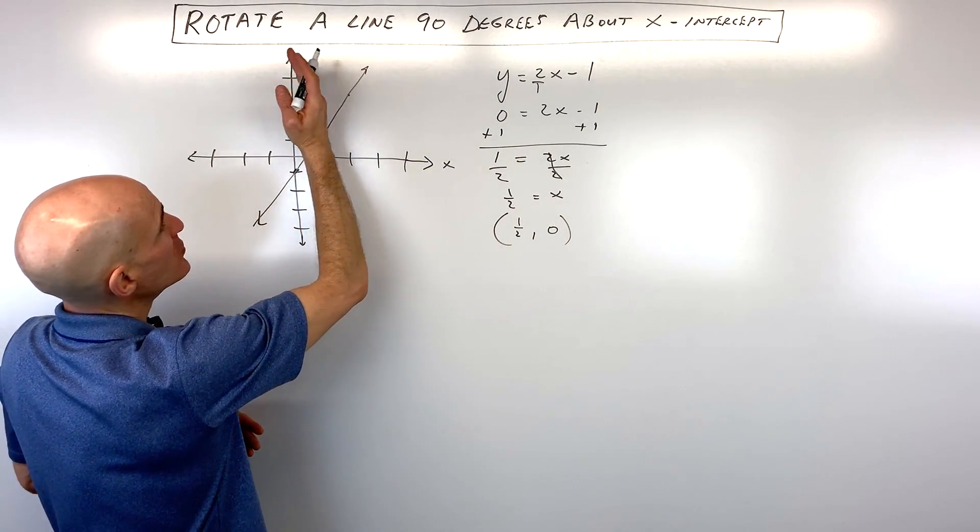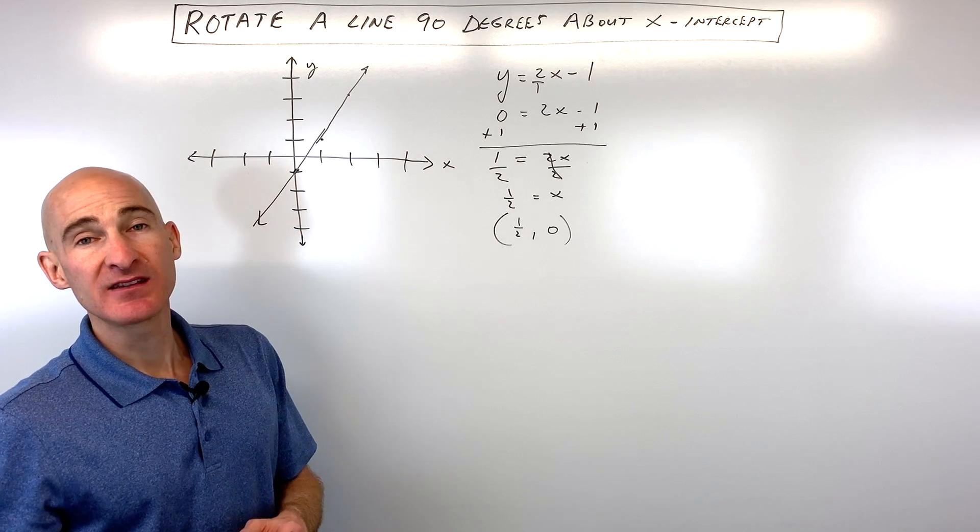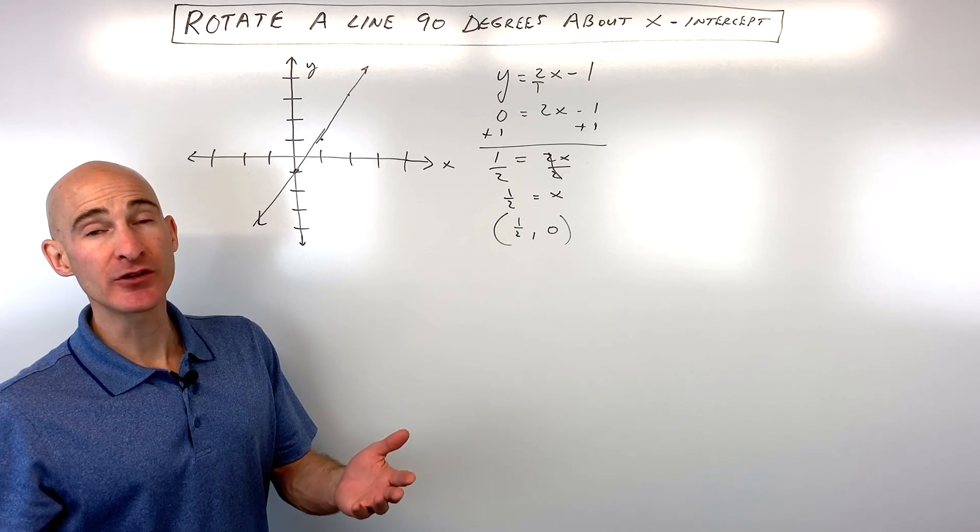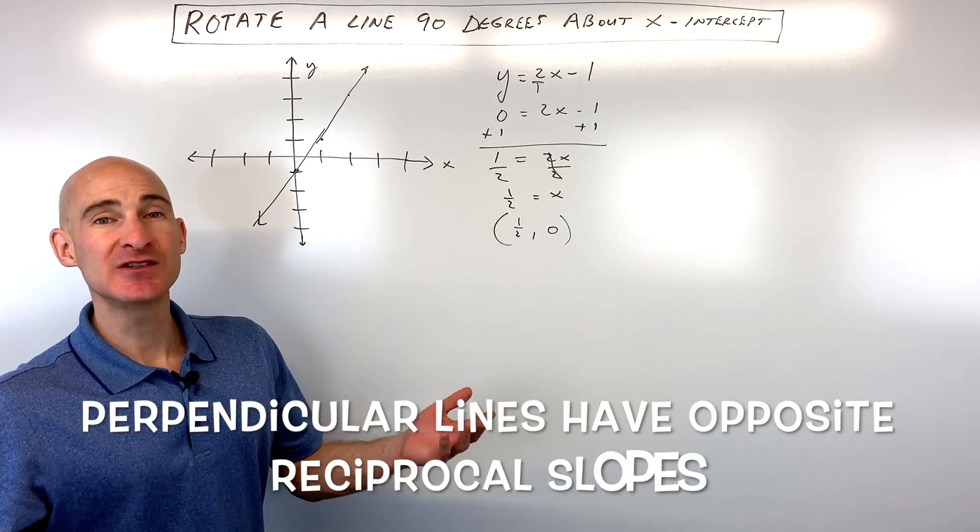But when you think about rotating 90 degrees, what that means is that the lines are going to be perpendicular to one another. What do you know about lines when they're perpendicular? Well, their slopes are going to be opposite reciprocals.